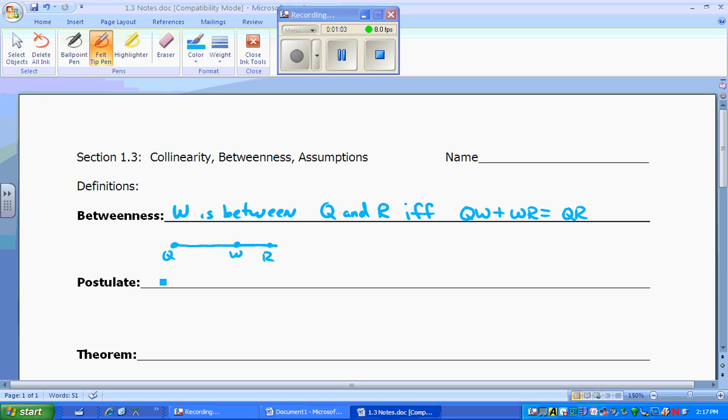A postulate is an unproven assumption. That means we assume it, but it has not been proven. A theorem, on the other hand, is a statement that can be proven because it already has. It's been published and so on.